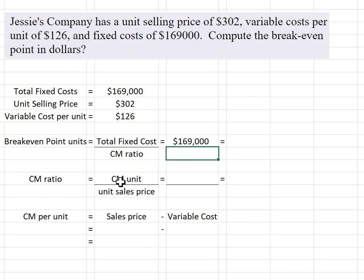How do I calculate the contribution margin per unit? Hopefully you remember it's the sales price minus the variable cost per unit. So we've got $302 as the sales price, and variable cost per unit was $126.